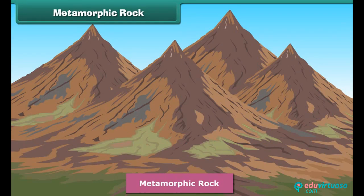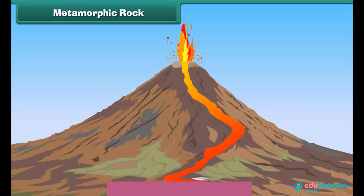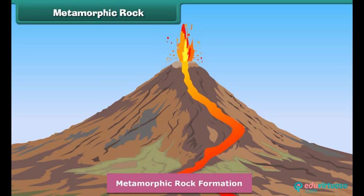Now we come to metamorphic rock. It is formed either from igneous or sedimentary rock. Igneous or sedimentary rocks are changed or modified into metamorphic rock due to the influence of heat and pressure. This process occurs deep inside the earth. Metamorphic rock is usually hard and often contains crystals.